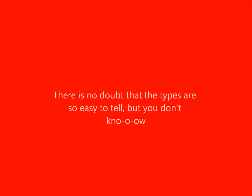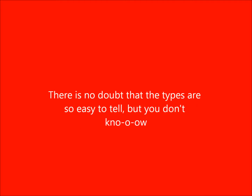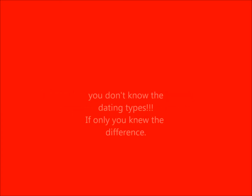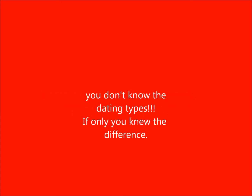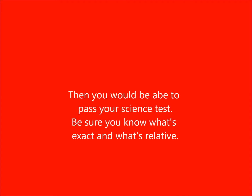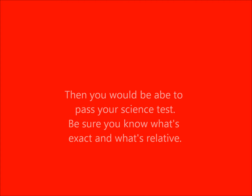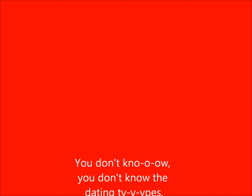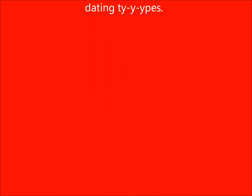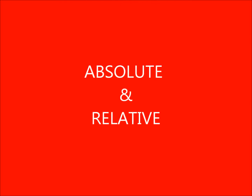If you don't know how to do it then listen close. There is no doubt that the types are so easy to tell, but you don't know — you don't know the dating tides. If only you knew the difference, then you would be able to pass your science test. Be sure you know what's exact and what's relative. You don't know the dating tides — absolute and relative.